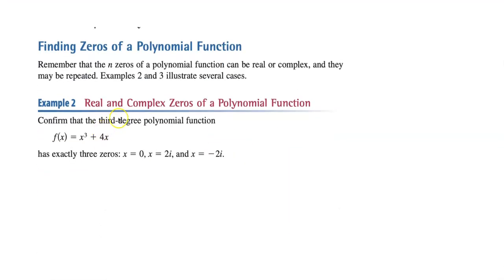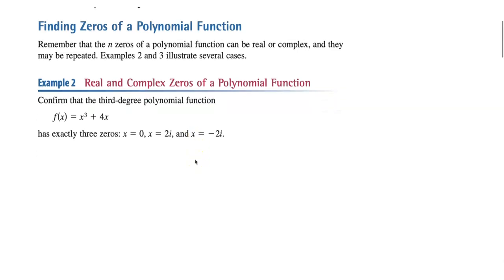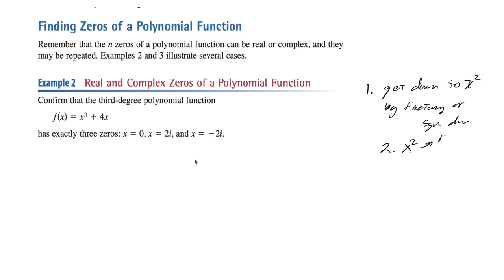So how do you find the zeros of a polynomial? The easiest way, if you can, is to factor and then solve. What we want to do is get down to x squared by factoring or synthetic division, and then once you get down to x squared, you can solve by factoring, completing the square, or the quadratic formula. The key to solving a polynomial function is getting down to x squared. We could factor to get there or use synthetic division like we did in a previous lesson.